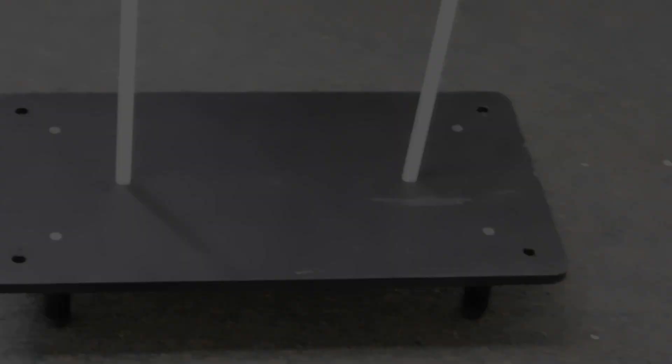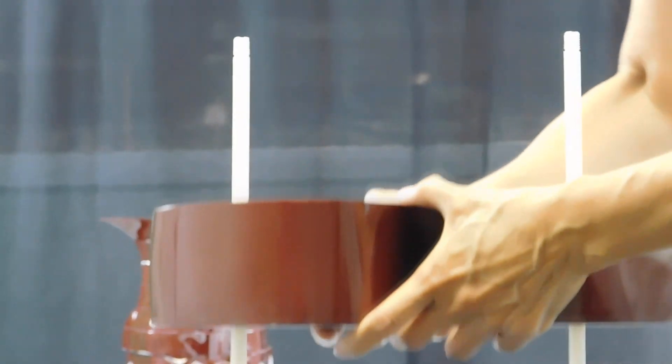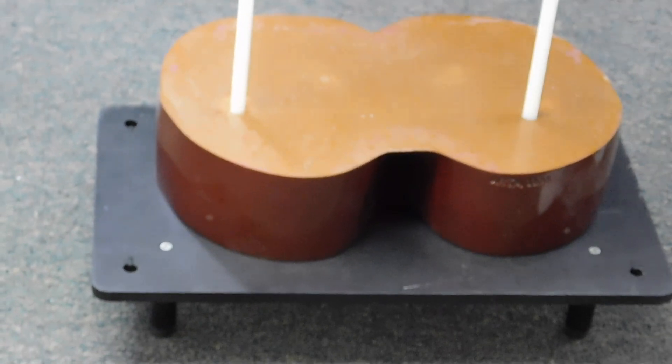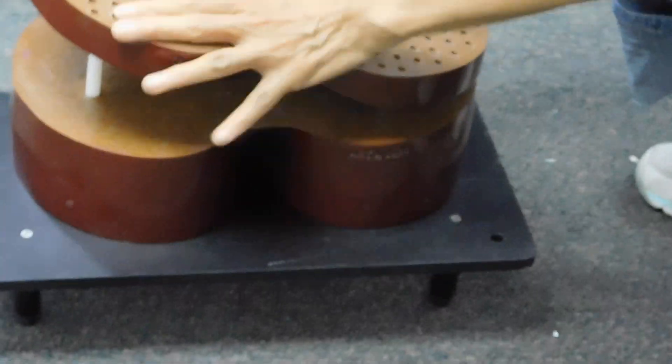Start with the base section at the bottom and align the nylon rods into the holes. Then, stack sections 34 through 11, beginning with the highest number, working backwards.